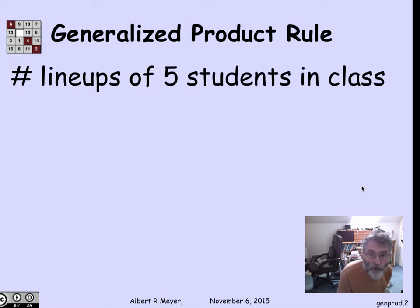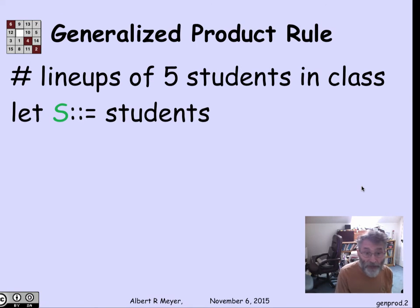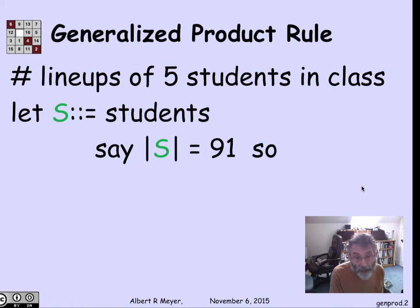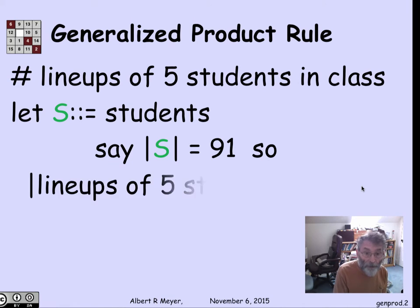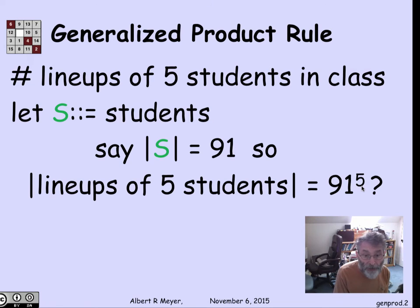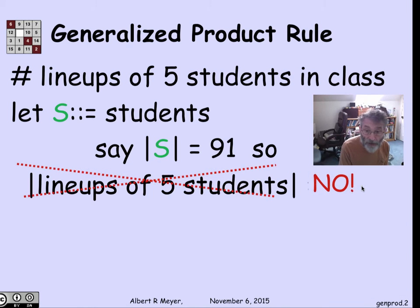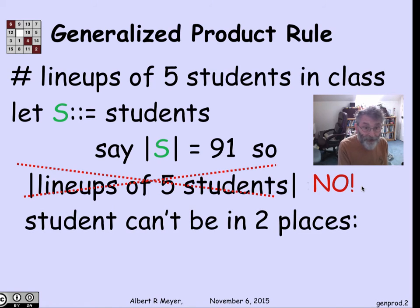The generalized product rule applies to an example like this. Suppose I want to count how many ways there are to line up five students in the class. If we let S be the number of students, say 91 students in a session, then the number of lineups of five students, applying the product rule mindlessly, would be 91 to the fifth. But that's wrong because you can't have the same student in two places at once.